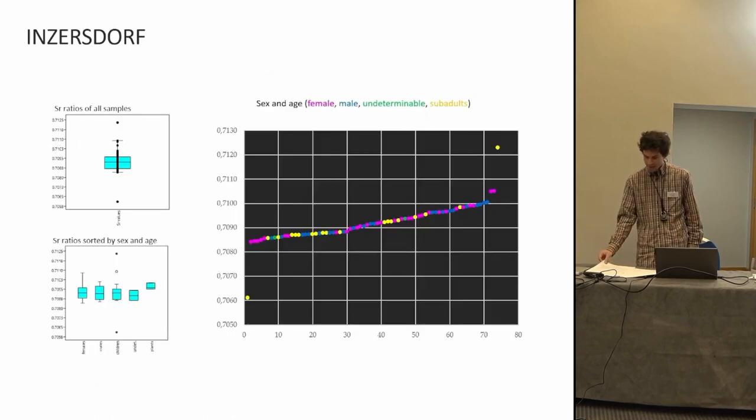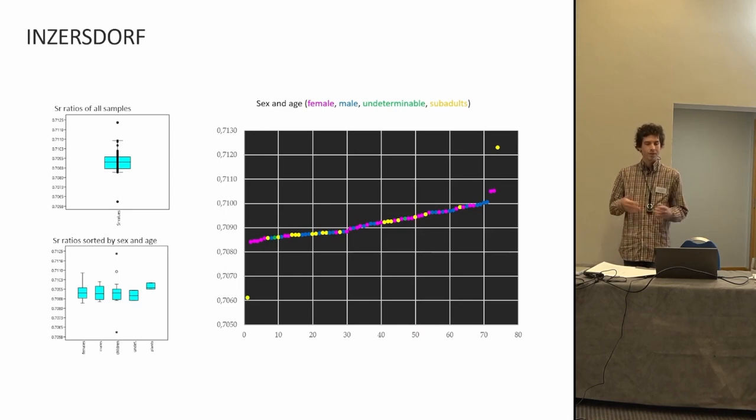We analyzed around 120 strontium samples from Inzersdorf. In the results, you can see that female values are much more variable than male values, and two outliers are visible. One at the bottom range and one at the top range. And interestingly, both outliers are subadults. So, let's have a closer look at these graves.